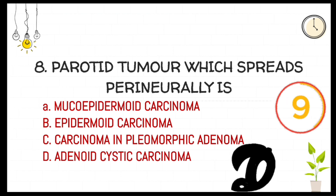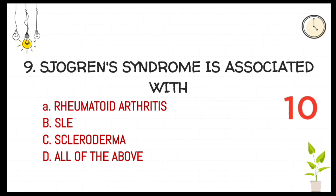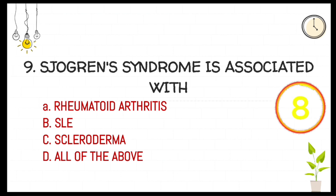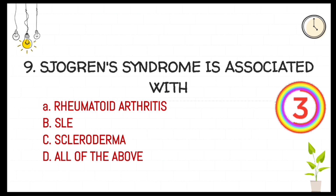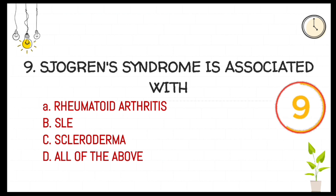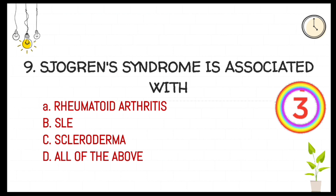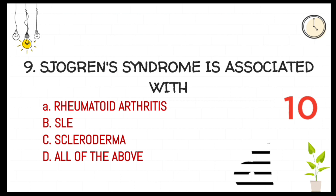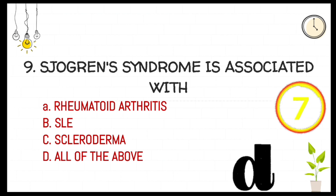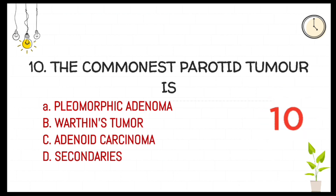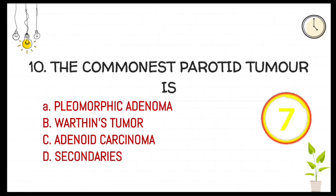The answer is adenoid cystic carcinoma. Sjogren's syndrome is associated with — option B, as you must be knowing — systemic lupus erythematosus. All of the above is the answer. Last one of the series: common parotid tumors.